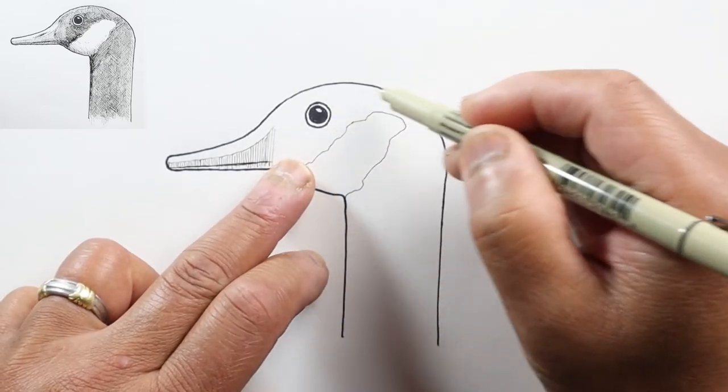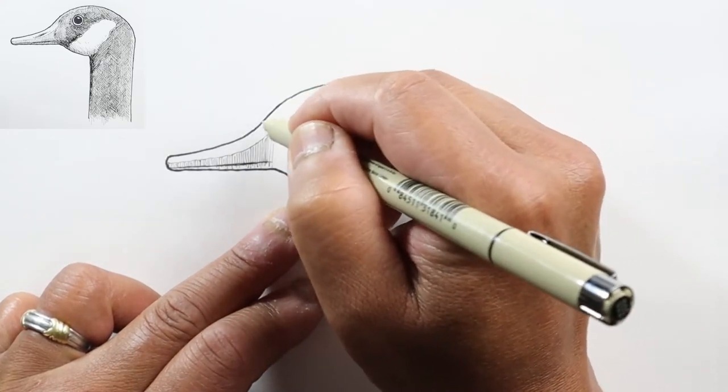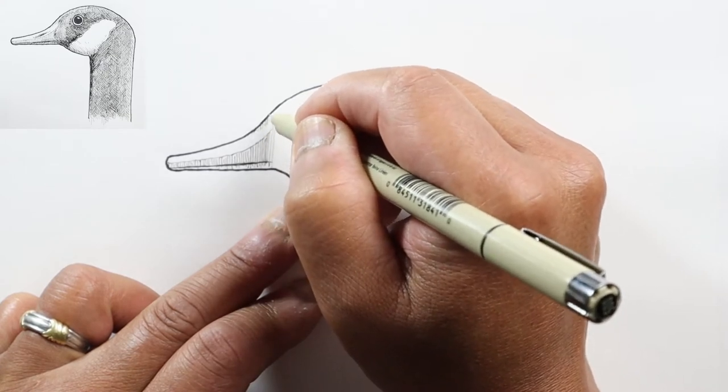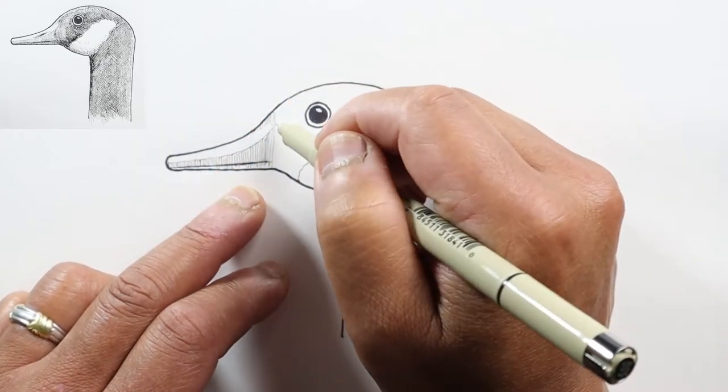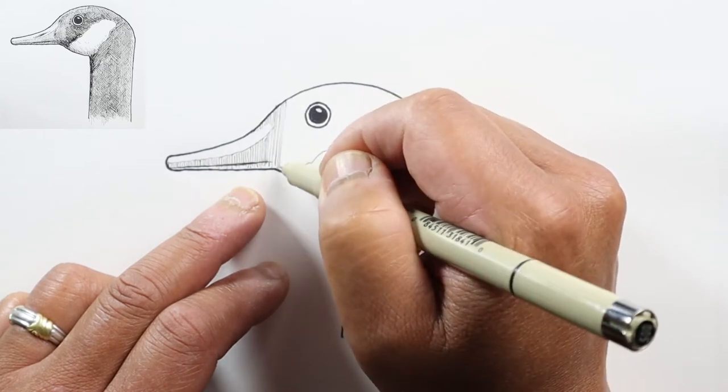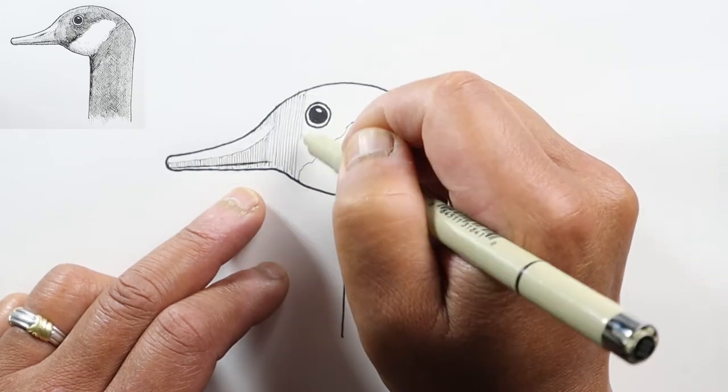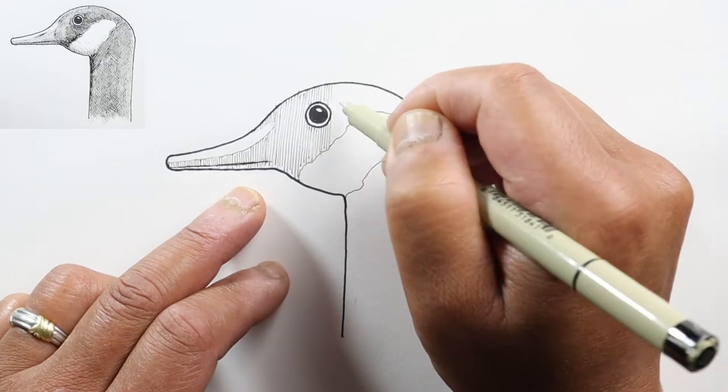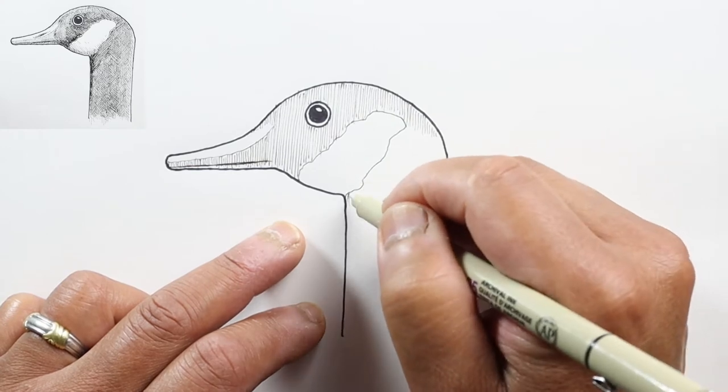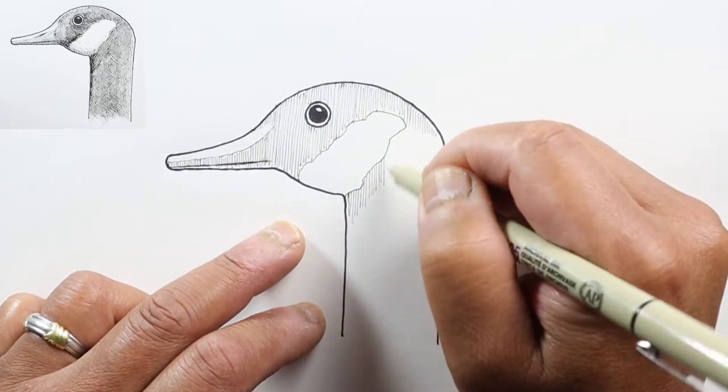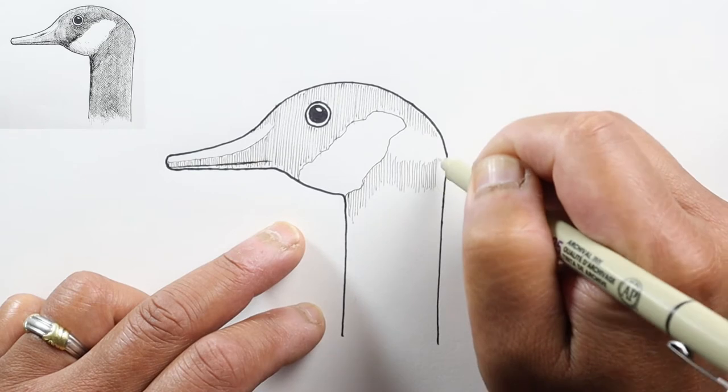This whole area, except for this white part, will be dark. Let's continue by adding some lines where we're starting to get some shade, some values, and continue this shading all the way across. As I get to this neck part where it's going to be pretty long, I'm going to use shorter lines to cover the area.